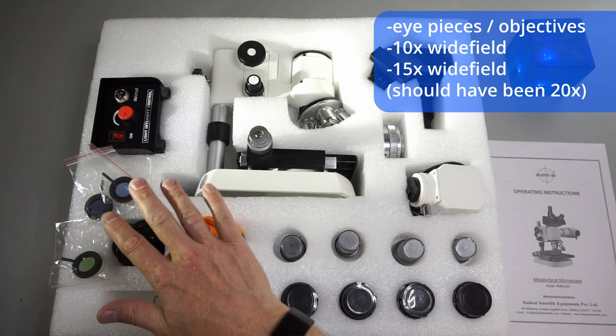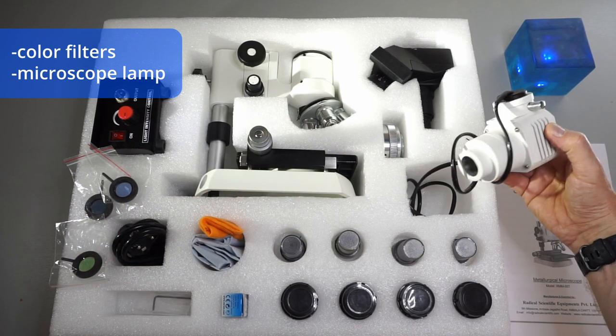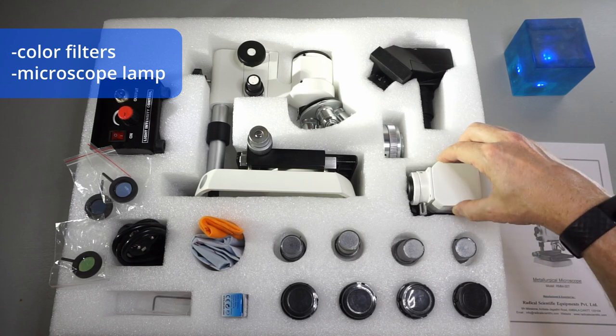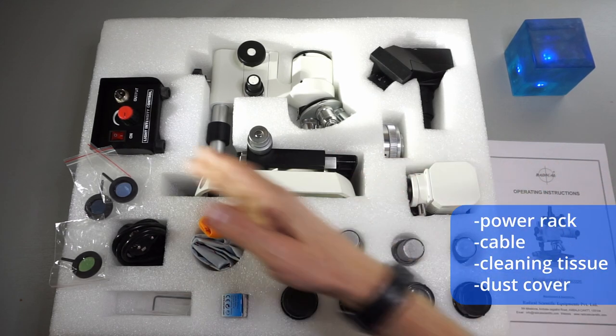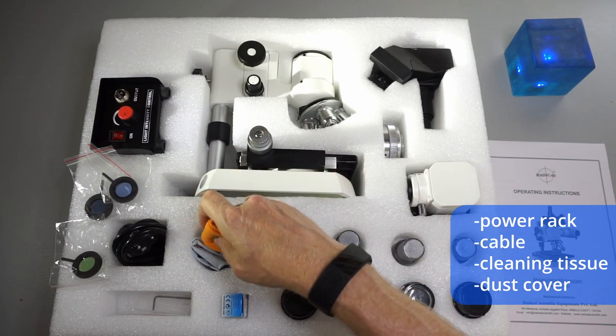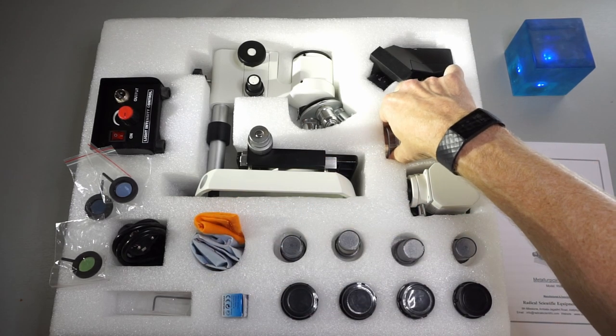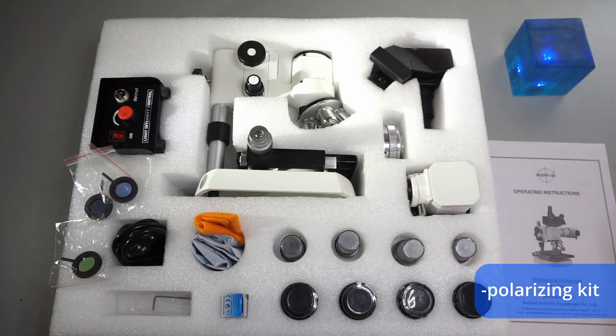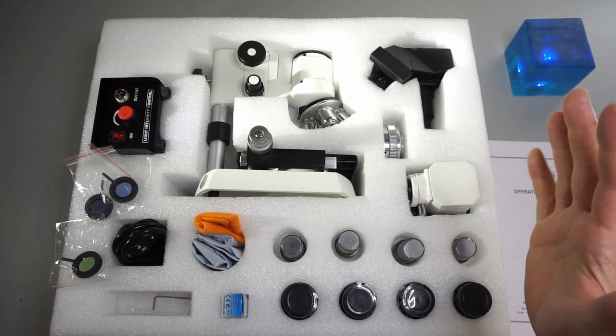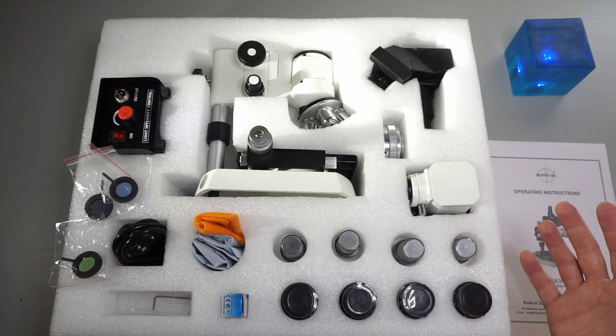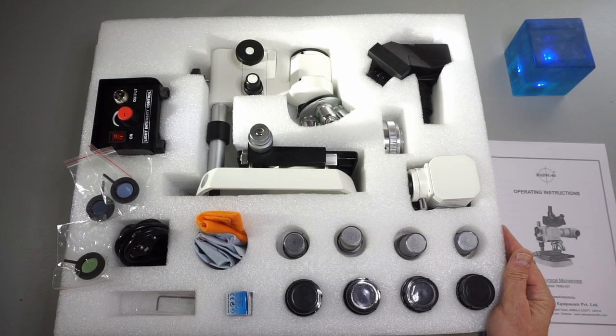There are some specific blue and green filters which we can use together with this lamp, which is a typical feature of a metallurgy microscope. We have the power pack, the cable, a tissue, there's a dust cover, and a polarizing kit which is this part. So everything's there, I'm super happy. The whole thing cost less than 400 euro plus importing tax. Shipment was paid by Radical, so yeah, so far so good.